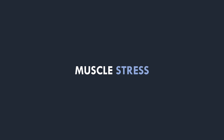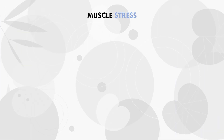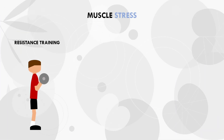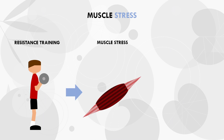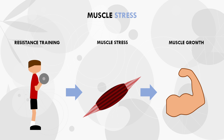Before getting into the details of lifting technique, we first need to understand the basic concept of what stimulates muscle growth. Essentially, muscle growth is stimulated by dynamic contraction against resistance. This stresses the muscle we are training, and we experience muscle growth as an adaptation to this stress. Exactly how to maximize the muscle growth response is an entire topic in itself, but the key point to understand is that it is muscle stress which causes adaptation.